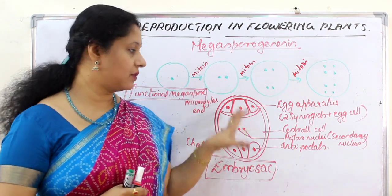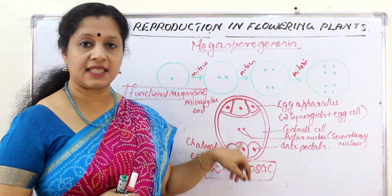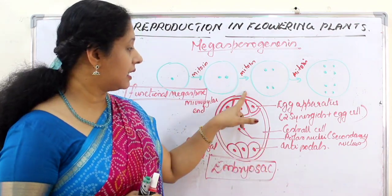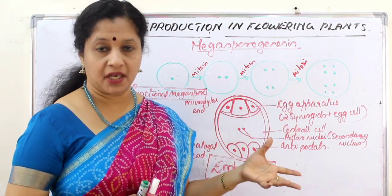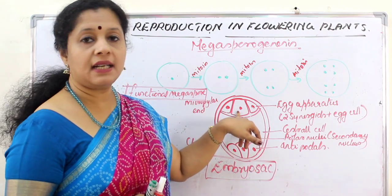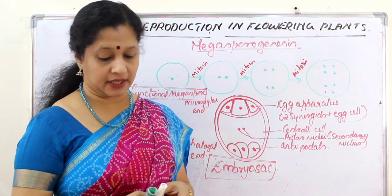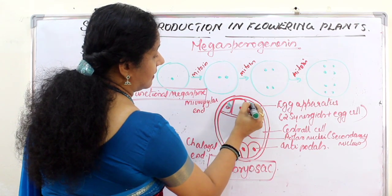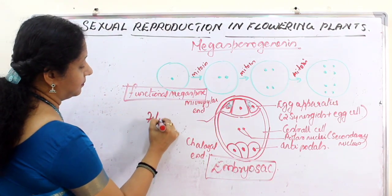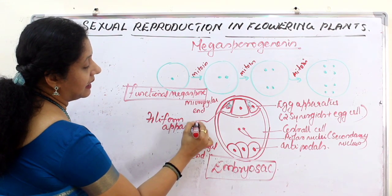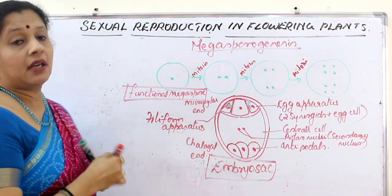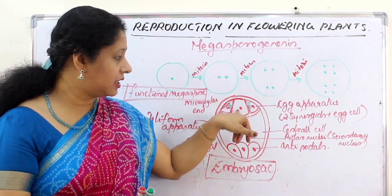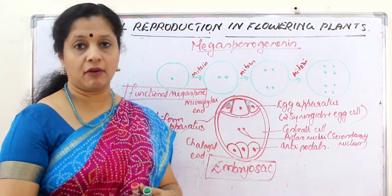You may be asked to justify that the embryo sac is eight-nucleated and seven-celled: three nuclei at the micropylar end, three at the chalazal end, and two in the central cell — eight nuclei but only seven cells. The three cells near the micropylar end are together called the egg apparatus, which consists of two types of cells: the central egg cell, which takes part in fertilization, and the other two called synergids. The synergids have special cellular thickenings inside called the filiform apparatus, whose function is to guide the pollen tube toward the female gamete.